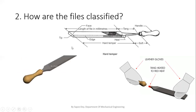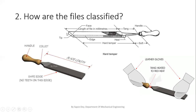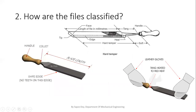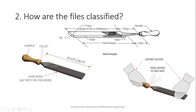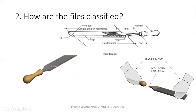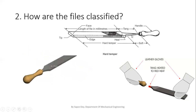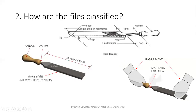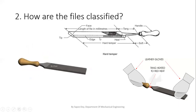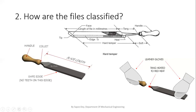Through these pictures we can see the parts of a file. The starting part is called the tip, and the other end is called the heel. The tip-to-heel area is our working area. The side portion is called the handle, and this portion is called the tang, which is inserted into the handle portion. Our working area is hard-tempered, and it is harder compared to the tang, because the working area is the main cutting region.